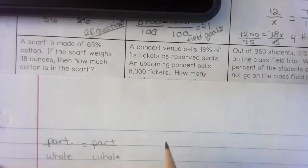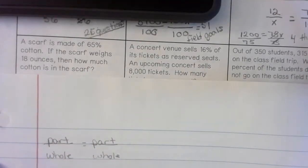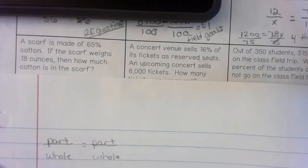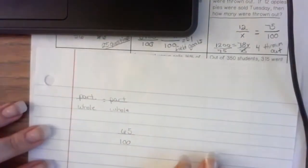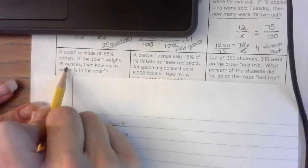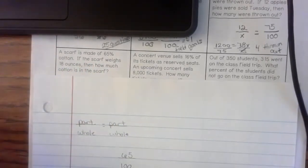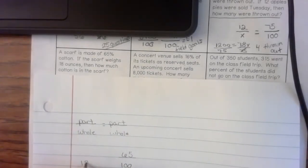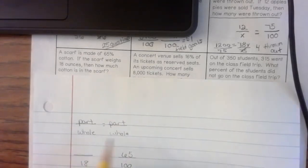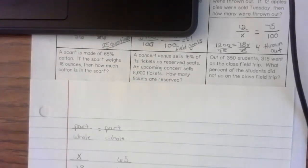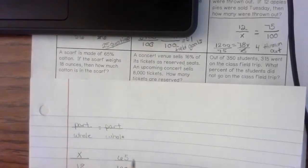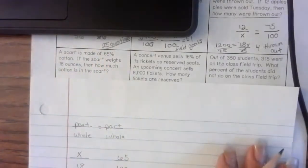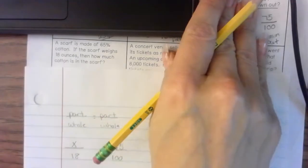In this situation, we know that the part of our percent is 65%. We know that 100 is the whole of a percent. If the scarf weighs 18 ounces, well, that's the whole. It weighs 18 ounces. Then what percent or how much cotton is in the scarf? This is what we do not know. We do not know the 65%, what amount that is, what number that is.